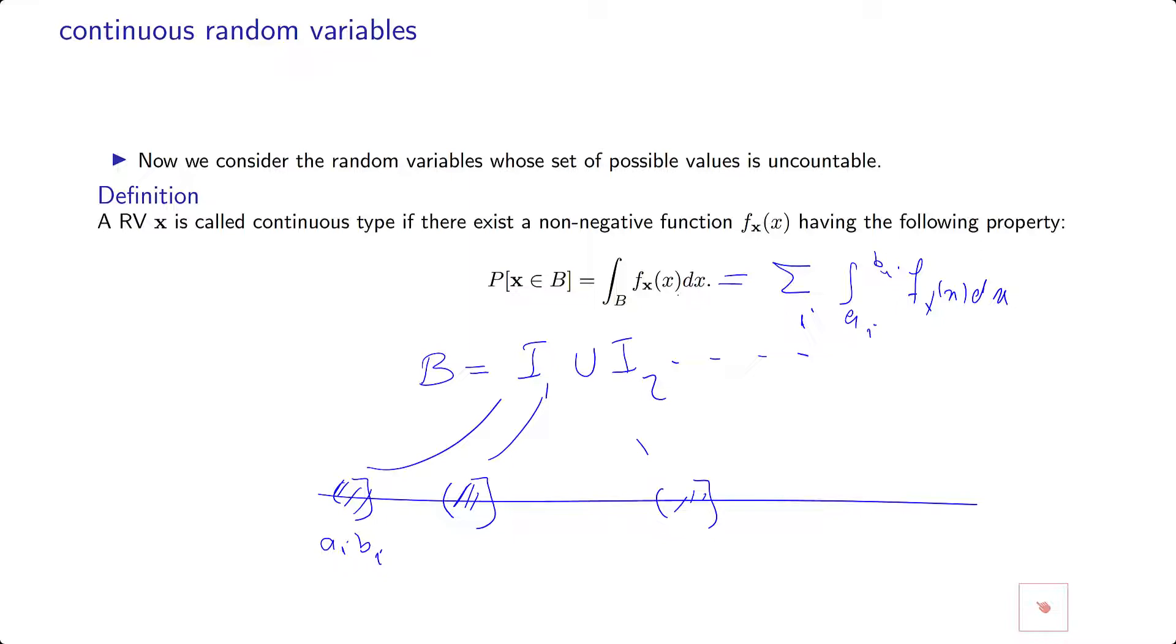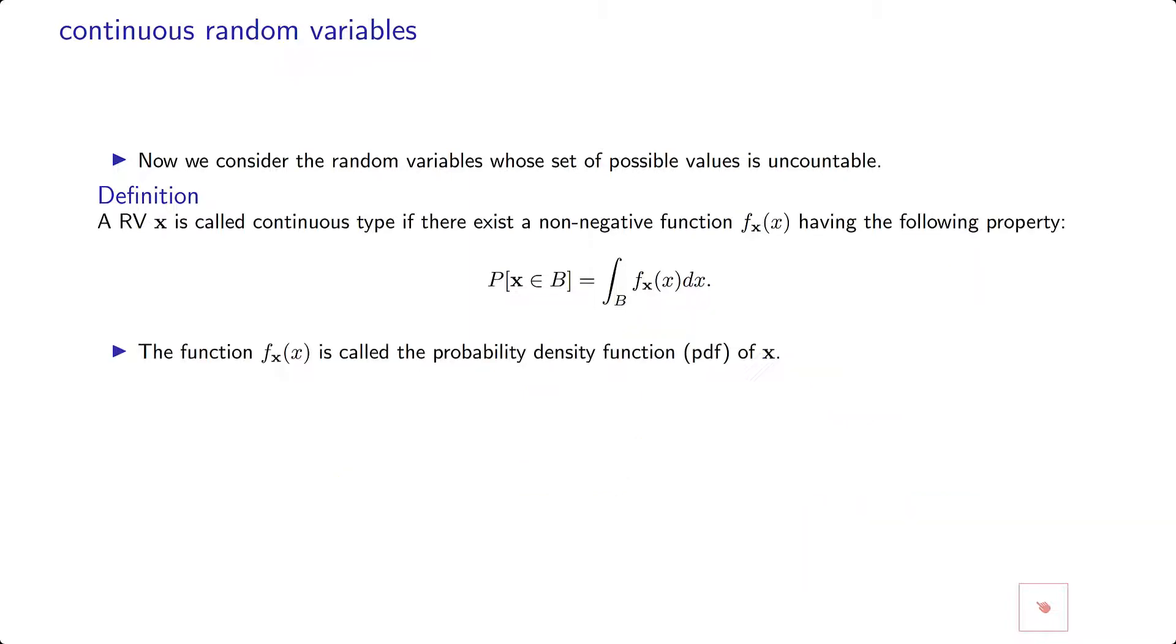This guy is called a probability density function, which is the derivative of the CDF. So we call a random variable a continuous type if f_x of x is a continuous function, or if you could write the probability in this form. So we define f_x of x as a probability density function, or PDF of x.